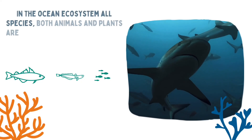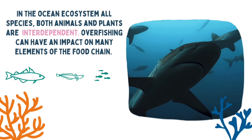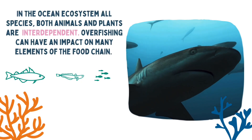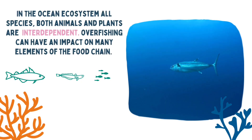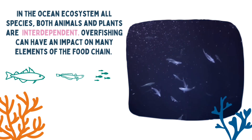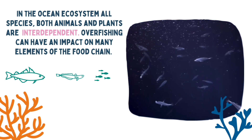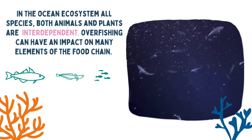In the ocean ecosystem, all species — both animals and plants — are interdependent. Overfishing can have an impact on many elements of the food chain.